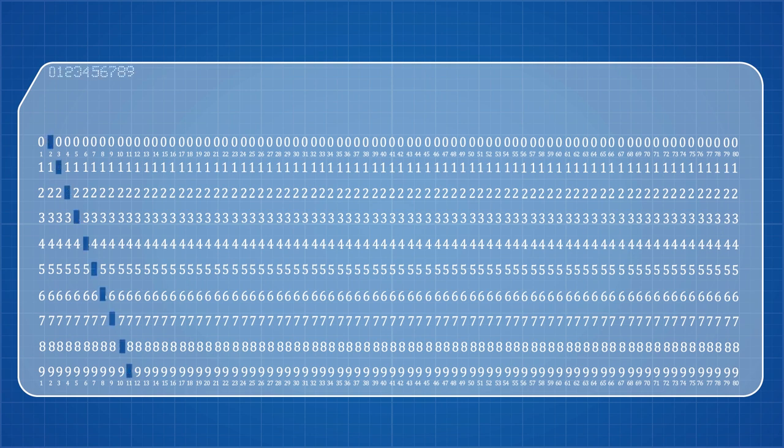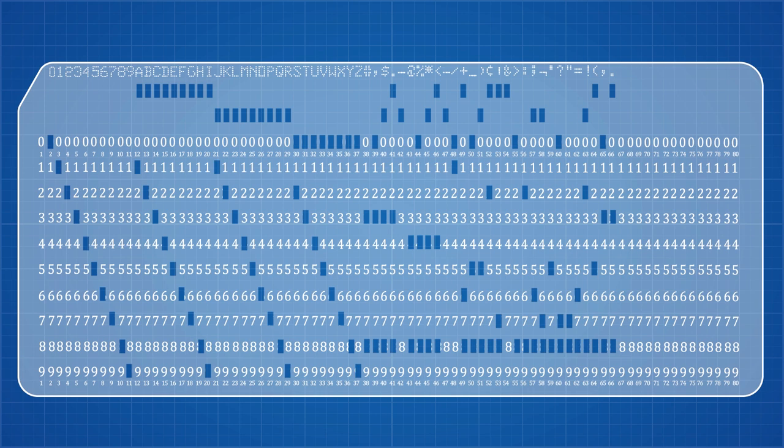To represent a number, you simply punched out the corresponding number in the sheet. To represent letters and symbols, required you to punch out additional holes. This sheet has all the possible hole punch combinations required for Fortran coding, to give you an example.